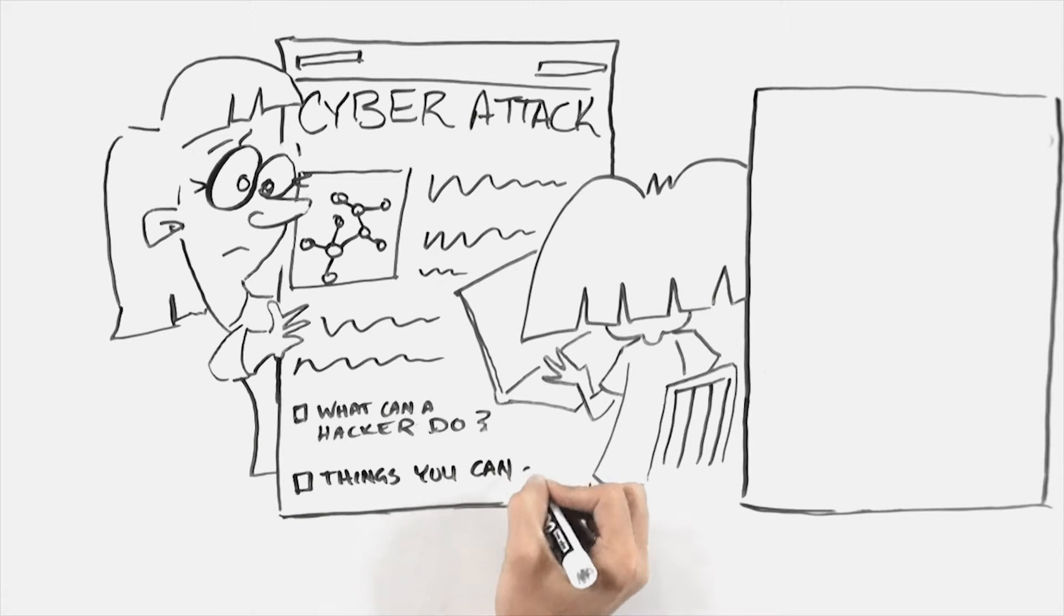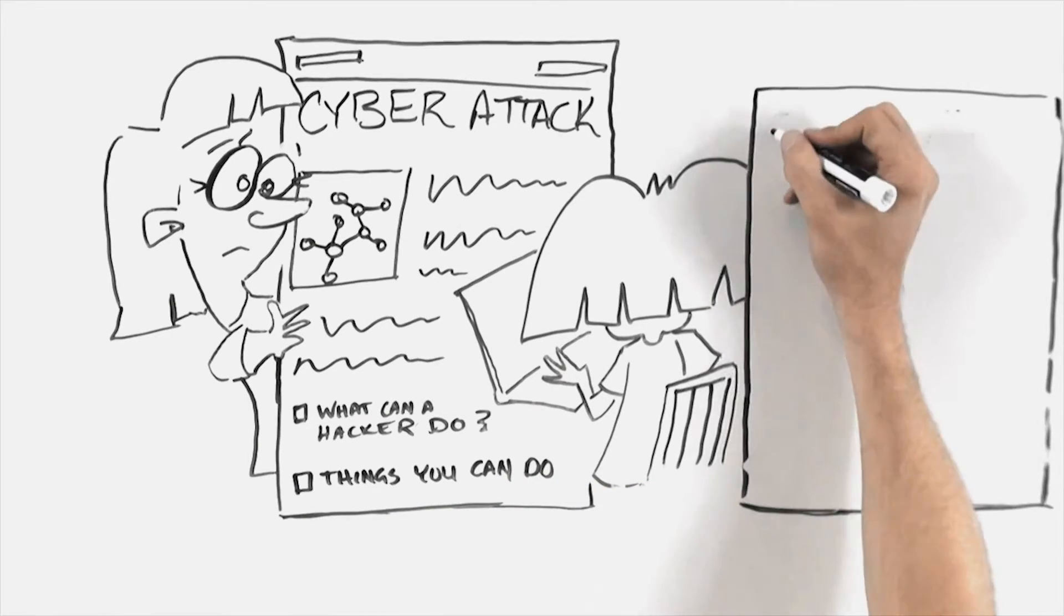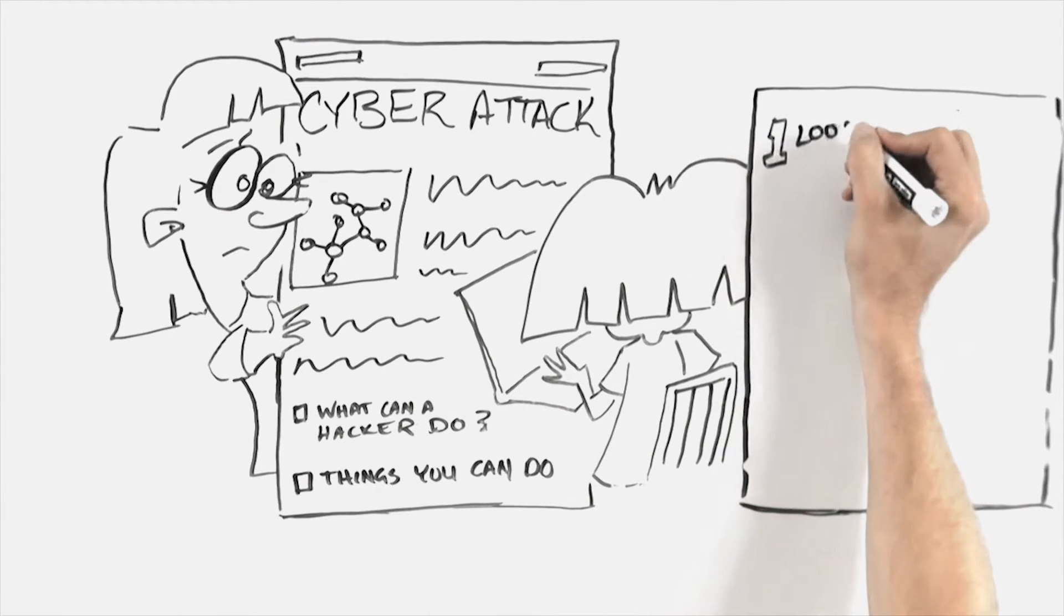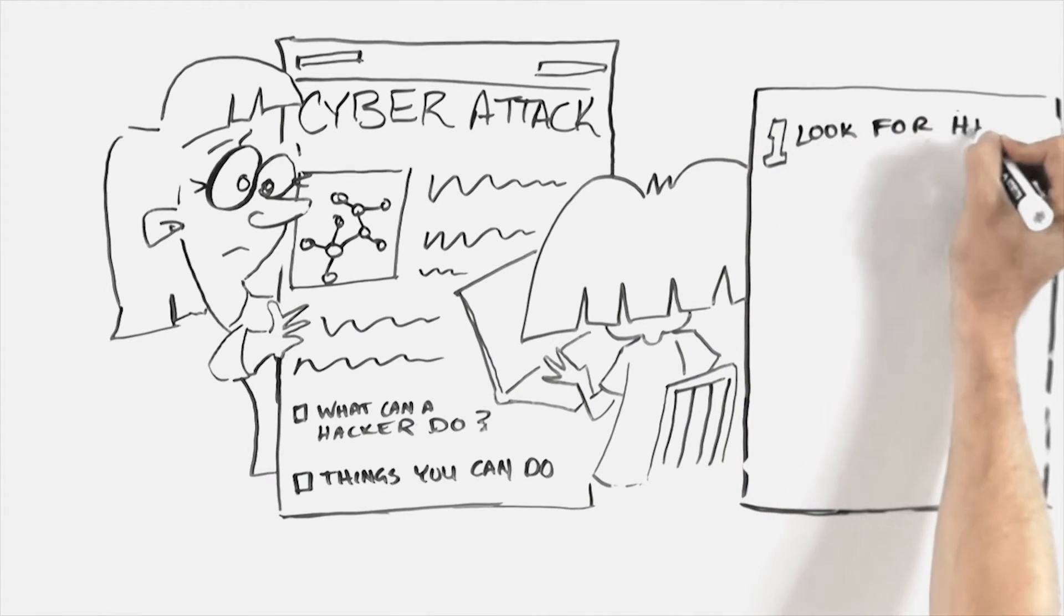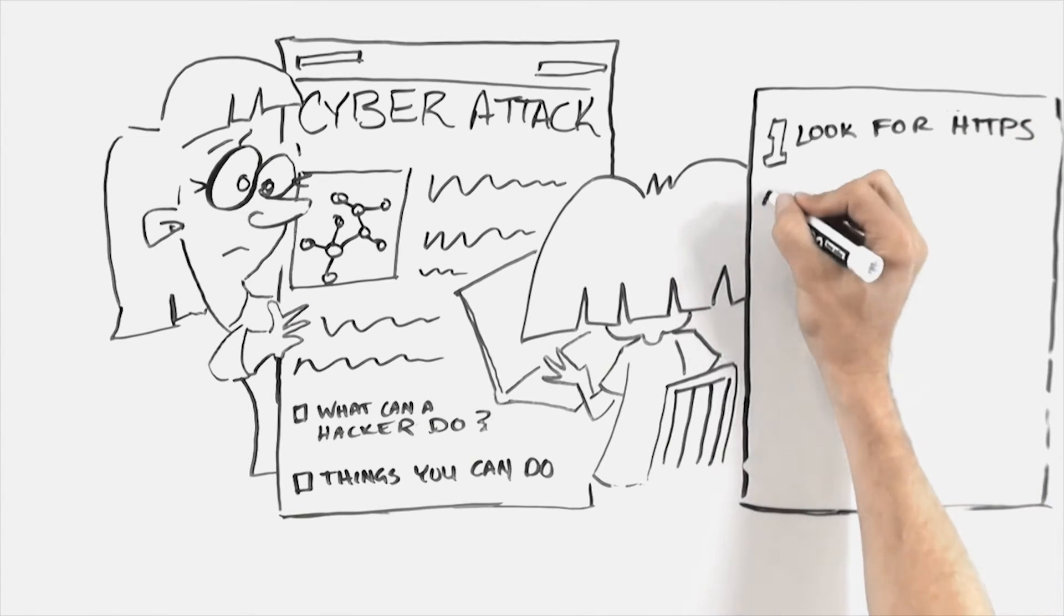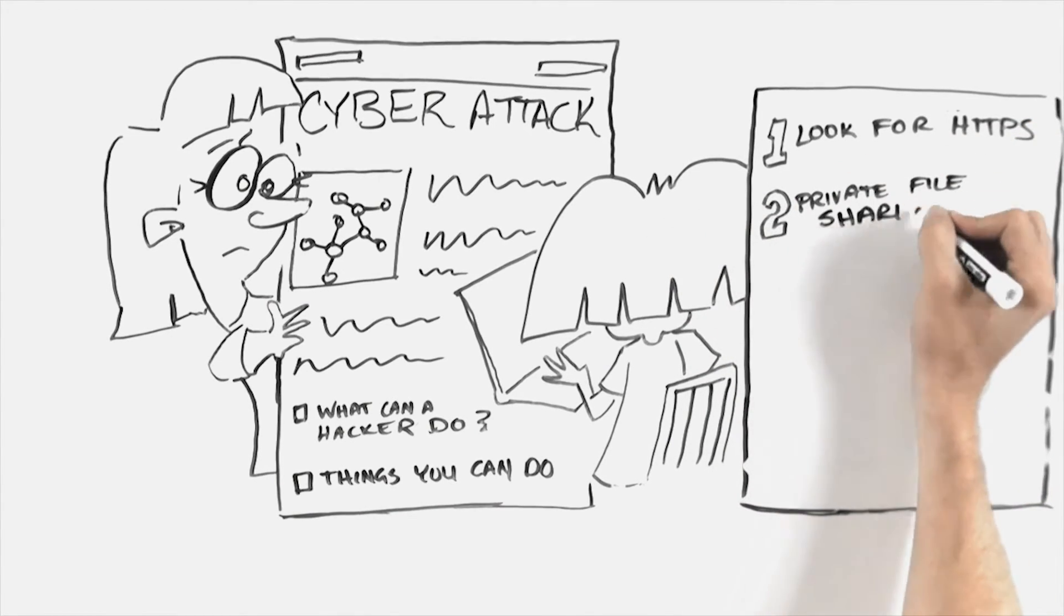Hey, there's another link and it's called, 5 things you can do to prevent Wi-Fi hacking. Let me see. Make sure you made a secured connection by looking for HTTPS in the address bar. The S stands for secure. Change the file sharing on your computer to private, not public. Never use the same password.